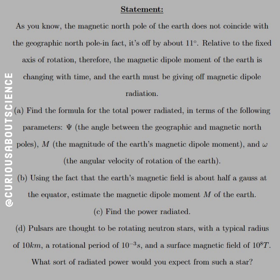Part A: Find the formula for the total power radiated in terms of the following parameters. Psi, the angle between the geographic and magnetic north poles; M, the magnitude of the Earth's magnetic dipole moment; and omega, the angular velocity of the rotation of the Earth.